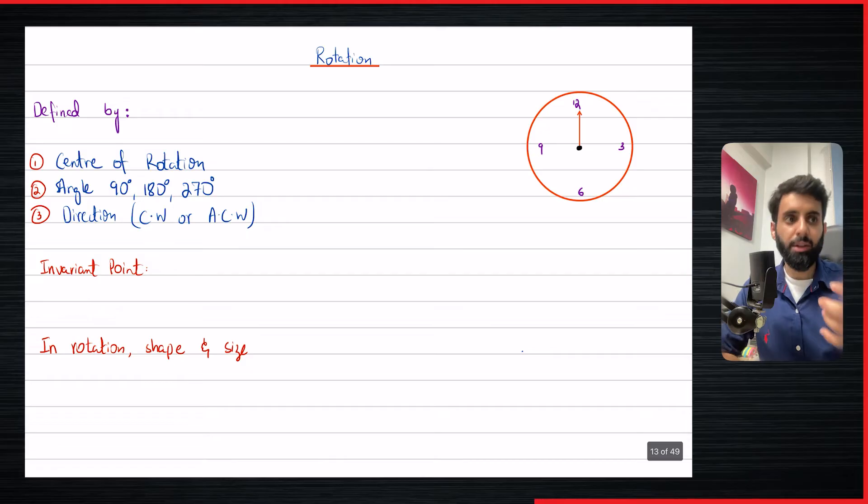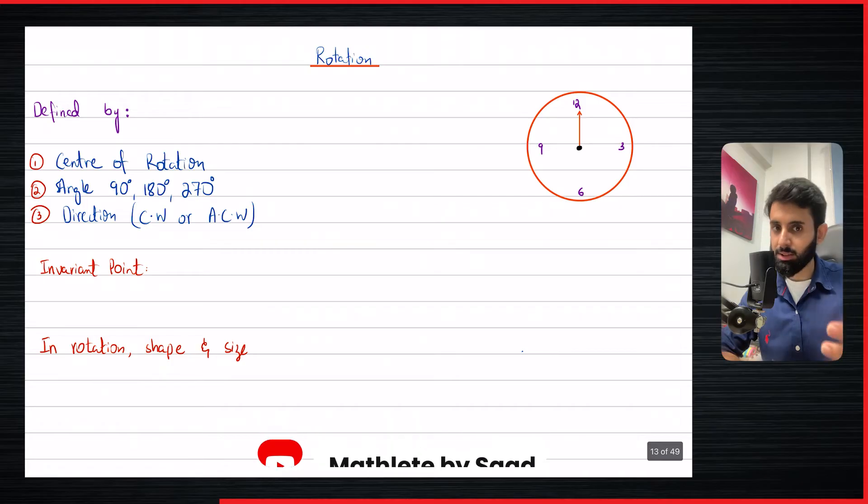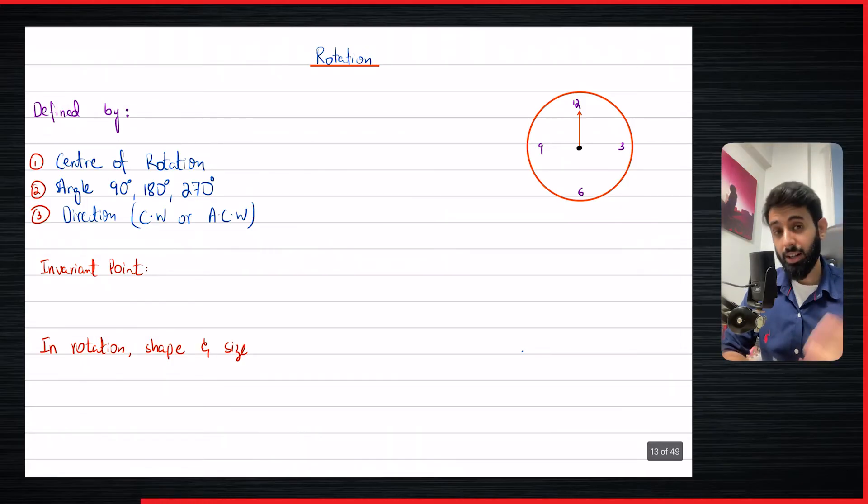These are the three things you have to watch out for. Whenever a question is asking you to rotate a certain object or even a point, it's going to give you the center (which could be the origin or not), the angle (90 degrees, 180 degrees, or 270 degrees depending on the question), and the direction. One thing I should point out: 90 degrees clockwise is the same thing as 270 degrees anti-clockwise, and 90 degrees anti-clockwise is the same thing as 270 degrees clockwise.